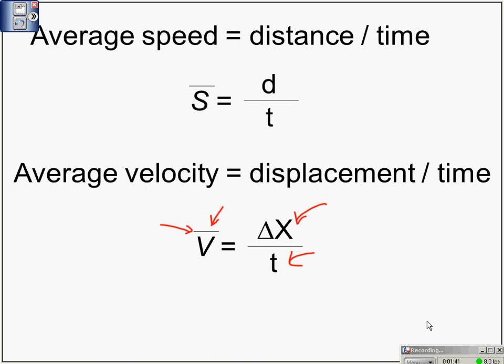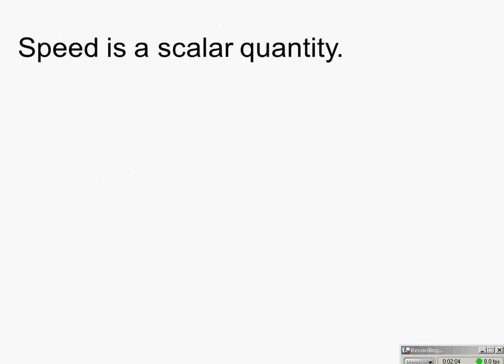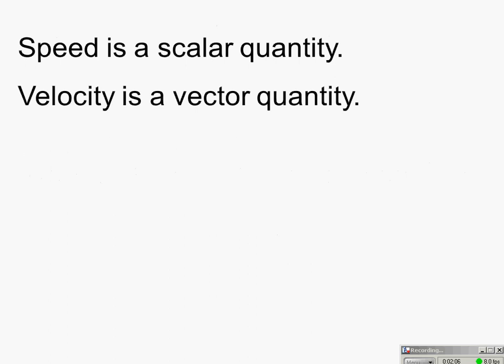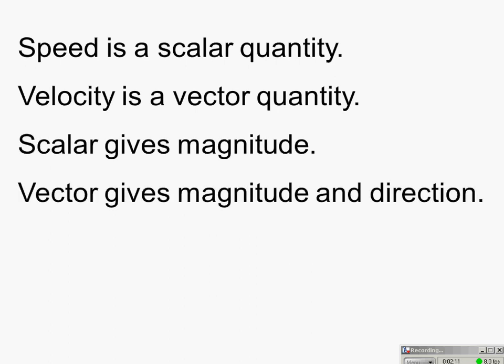To find average velocity, we need to know the displacement and divide it by the time it took. The key difference is that average velocity is a vector because displacement is a vector, while speed is not a vector because distance is not a vector. Speed is a scalar quantity; velocity is a vector quantity. Scalars give magnitude; vectors give magnitude and direction.